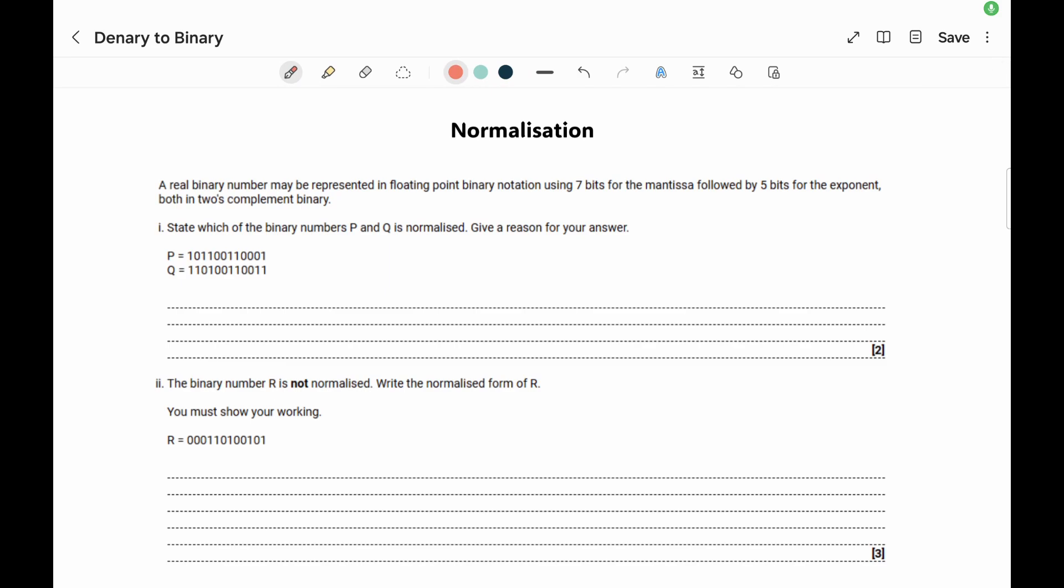The first question we've got, we've got two numbers, and it's asking us whether P or Q is normalized or not. So all we do is we look at the first two numbers on the left. So we've got 1, 0, and we've got 1, 1. So for a number to be normalized, it should start with either 0, 1 if it's positive, or 1, 0 if it's negative,